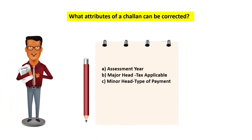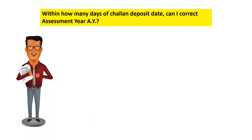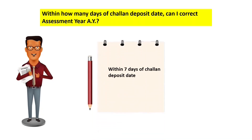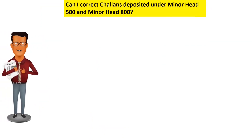There are three attributes of a chalan which can be corrected on the e-filing portal: assessment year, major head (tax applicable), and minor head (type of payment). Regarding time limits: the assessment year can be corrected within 7 days of the chalan deposit date. If you wish to correct the major or minor head, you get 30 days post the chalan deposit date.